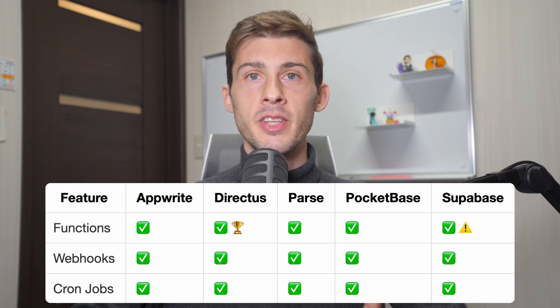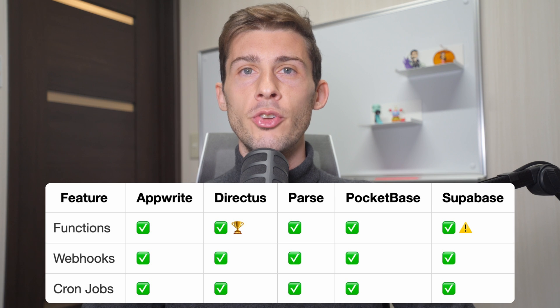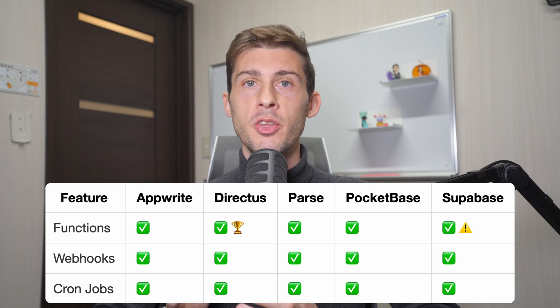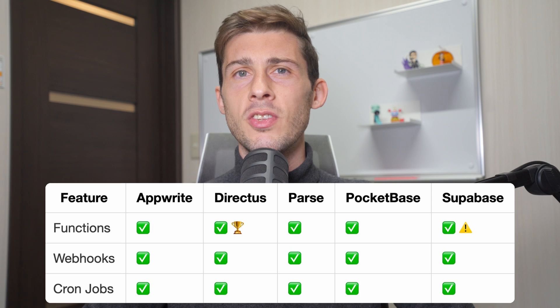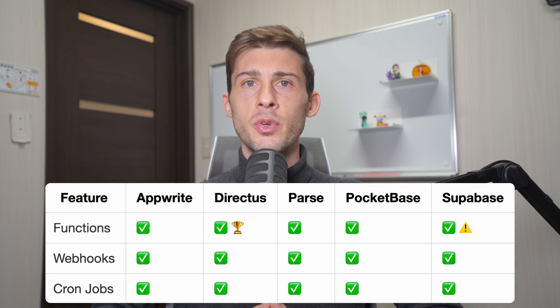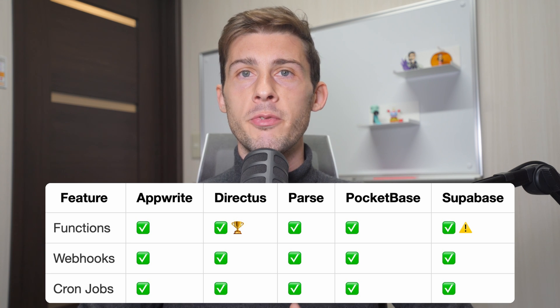Directus has the most advanced no-code/low-code solution, allowing you to create custom flows with a visual interface — a great solution if you want to build a custom backend without writing code. Appwrite and Supabase both allow you to create and view functions from the admin UI, while Pocketbase and Parse require you to write your function code directly on your server, which is more complicated but also more flexible. A small note about Supabase: their cloud version supports functions out of the box, but their self-hosted version didn't until recently, when they made their Edge Runtime open source. So with moderate effort, you can add functions to your self-hosted Supabase instance. Overall, you can create custom logic with all of them, but based on your workflow and preferences, you might prefer one over the other.